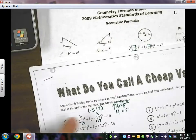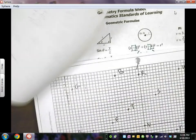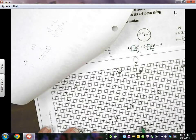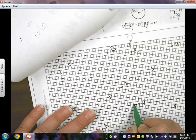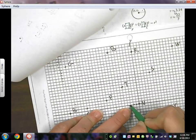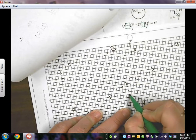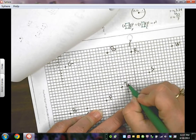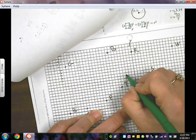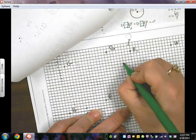So I first want to find the center, negative 3, 17. Negative 3 is here: 1, 2, 3. And then I go up 17: 1, 2, 3, 4, 5... 10... 15, 16... 17 is my center.